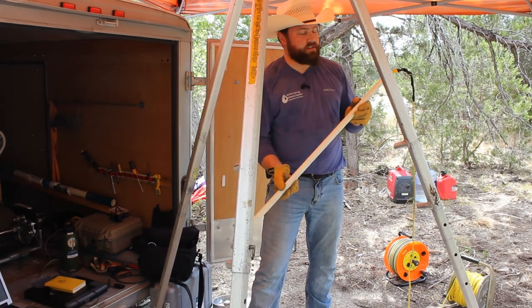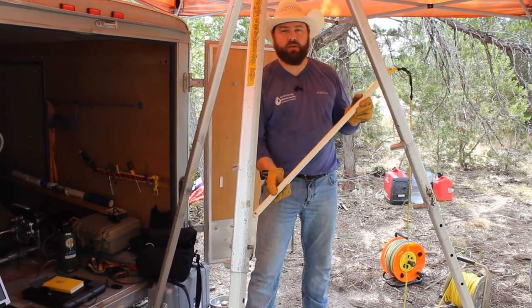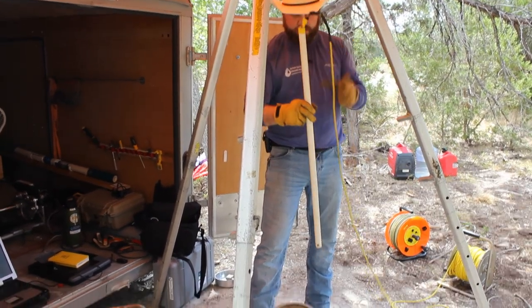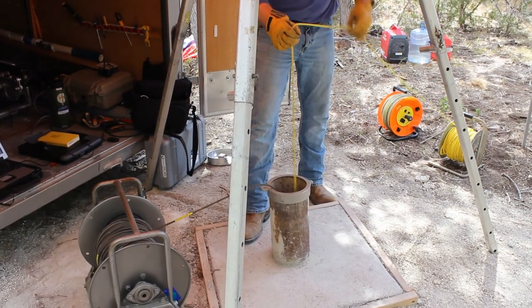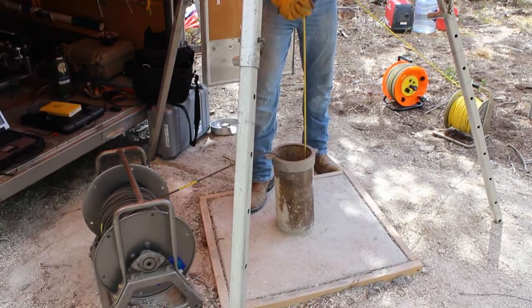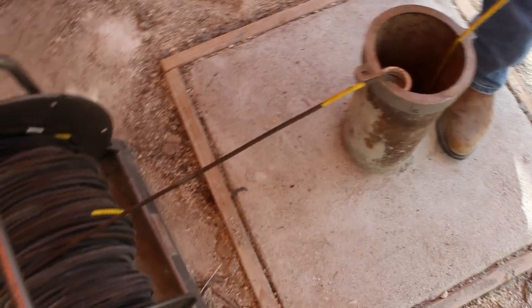Next we introduce the slug, in this case a weighted PVC with a known volume. We drop the slug down into the well below the water surface. The idea here is to introduce water displacement. Once the slug is submerged, we rely on the probe to measure water level changes.